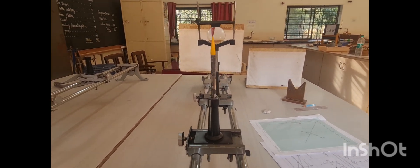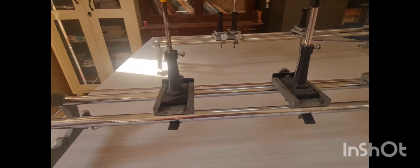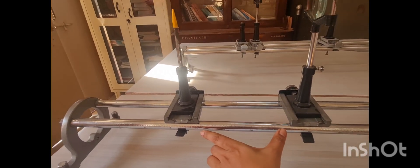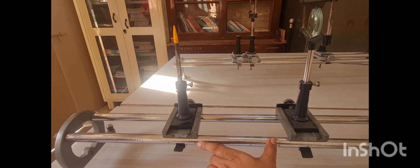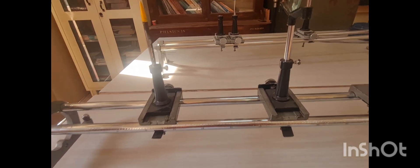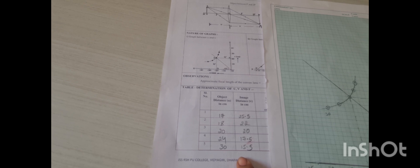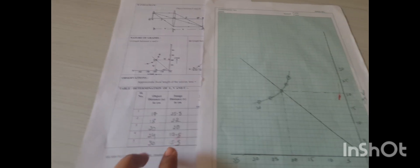Note down the position of the image pin, or the distance between the lens and the image pin. This distance we consider as the image distance v. Here are a few readings noted down for different values of object distance u and the corresponding image distances v.